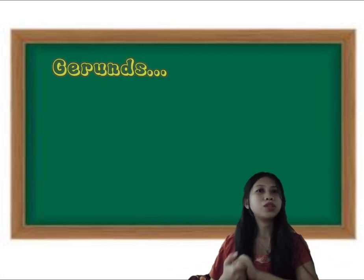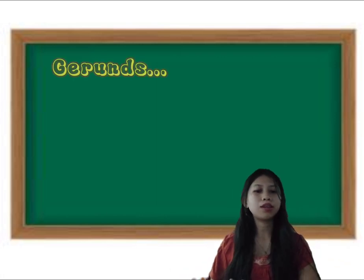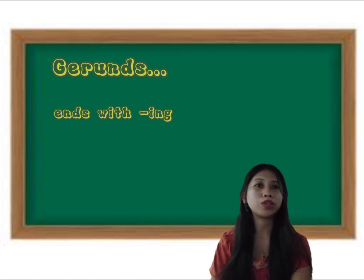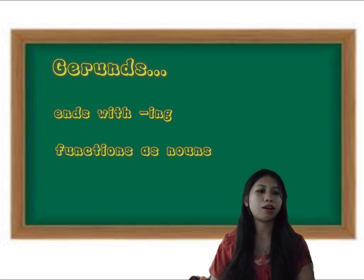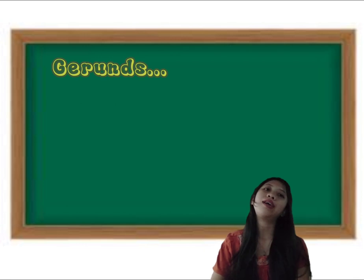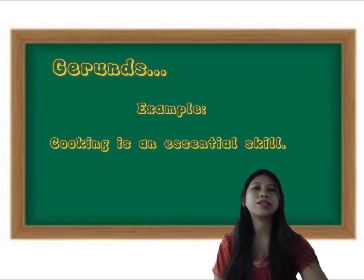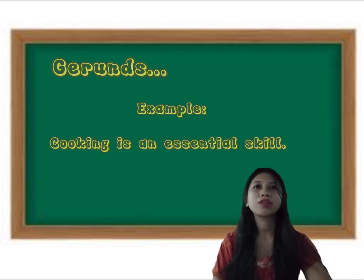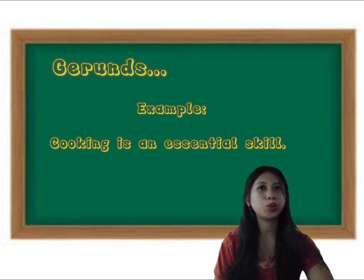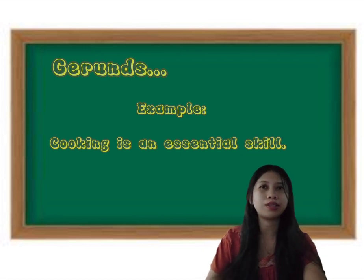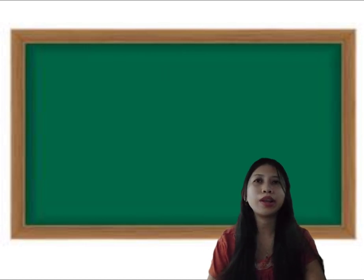So when we say gerund, it always ends in -ing, and it always functions as a noun. An example for this is: "Cooking is an essential skill." So cooking here is a gerund from the verb "to cook." In this example, it is functioning as a noun.